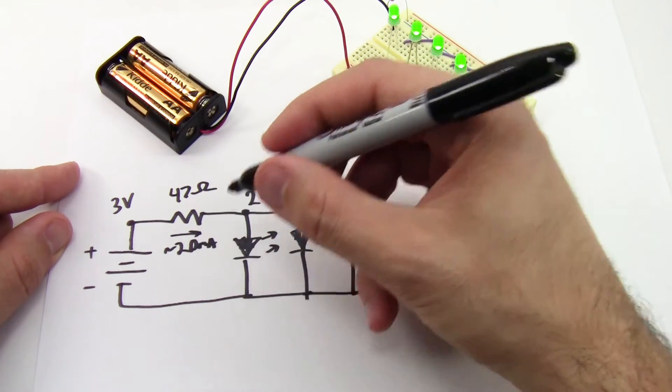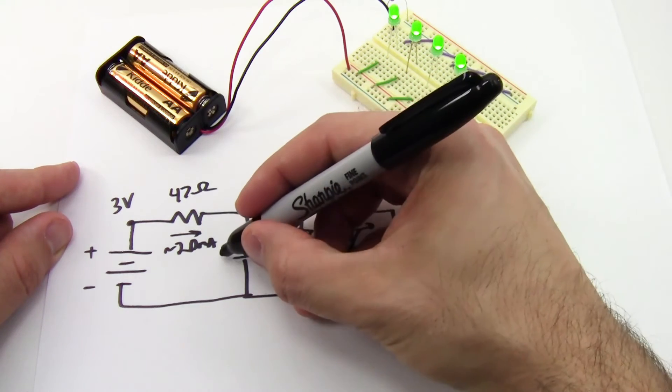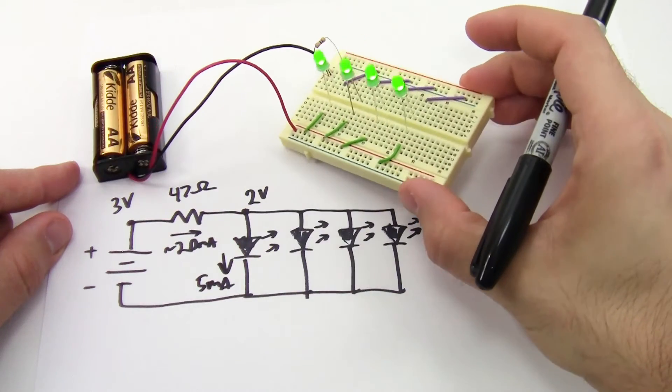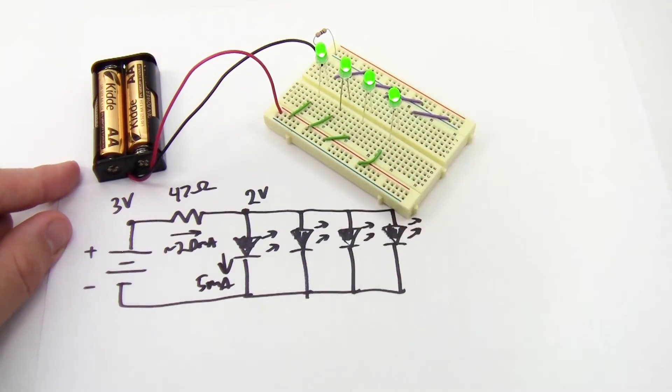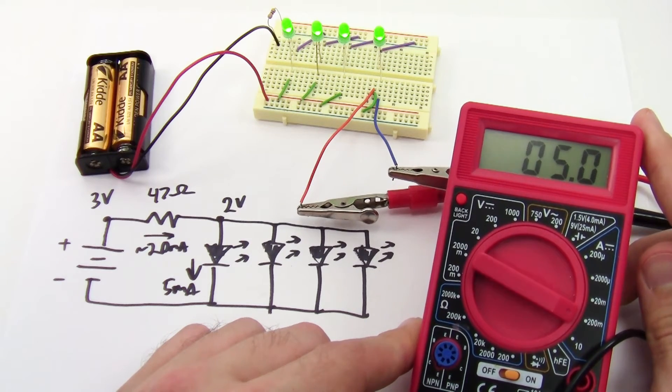The problem then is that this current is going to split four ways between these four LEDs because they're in parallel. So I'm only getting about five milliamps through each LED. It might be hard to see on the camera, but these are looking a little dim. I can verify that again with my multimeter, where I see that I'm only getting five milliamps through one of the LEDs.